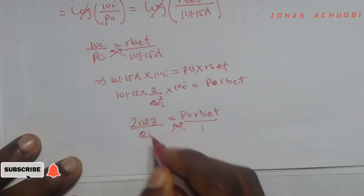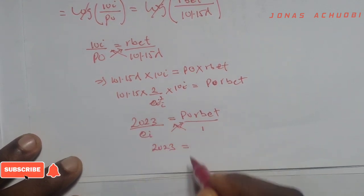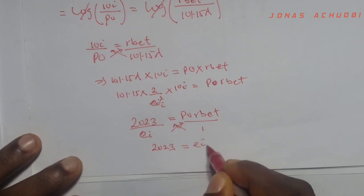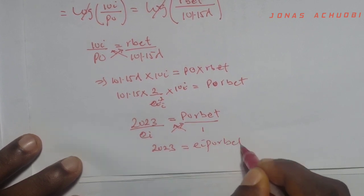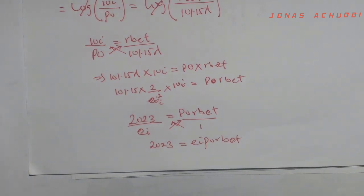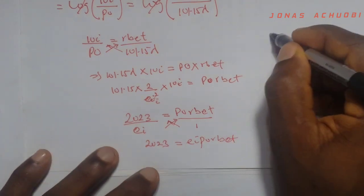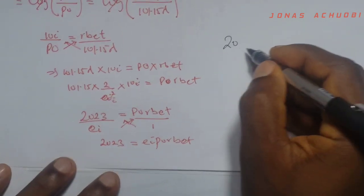So we can now cross multiply one more time. And we'll get i times 2023, 2023, equal to e times this, is eiporbет. But we know that the mathematics multiplication is commutative. So I can rewrite this if I want, as 2023 equal to,